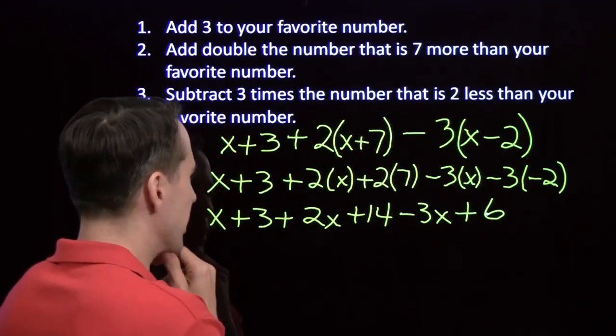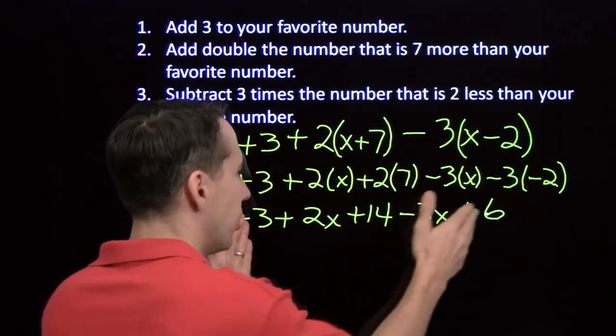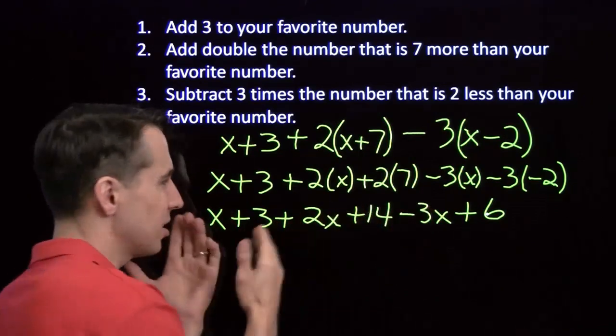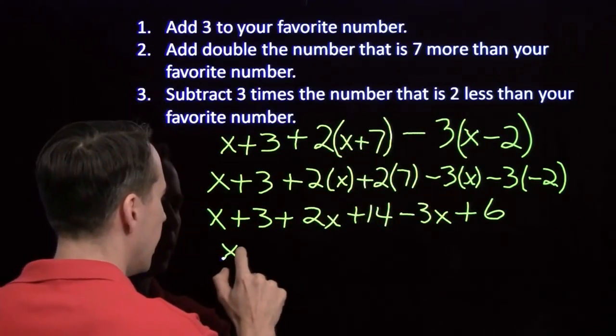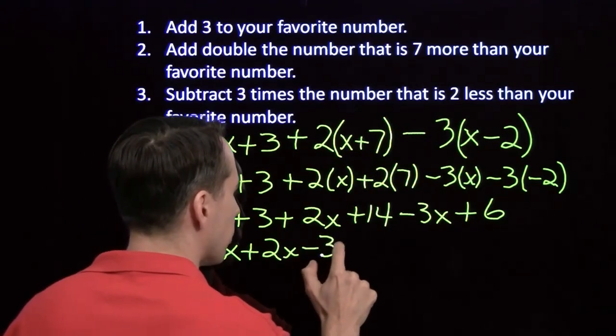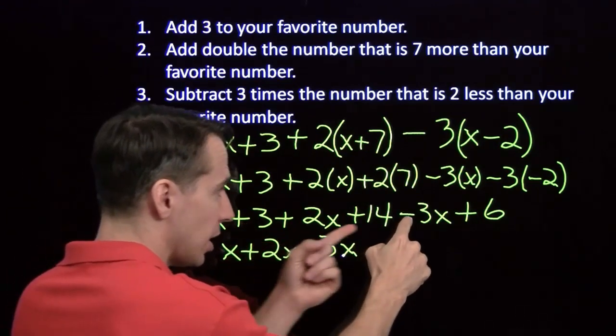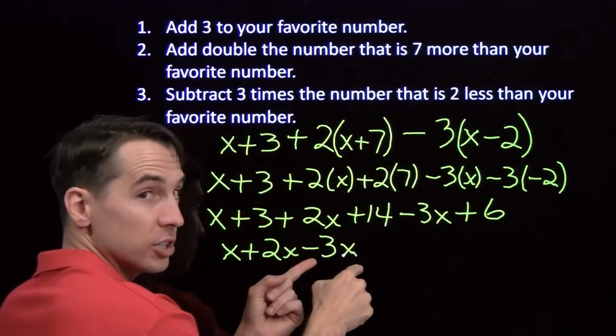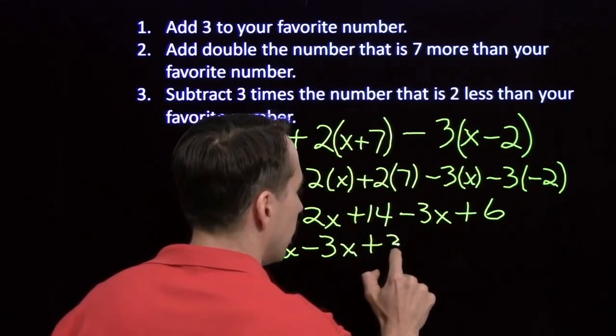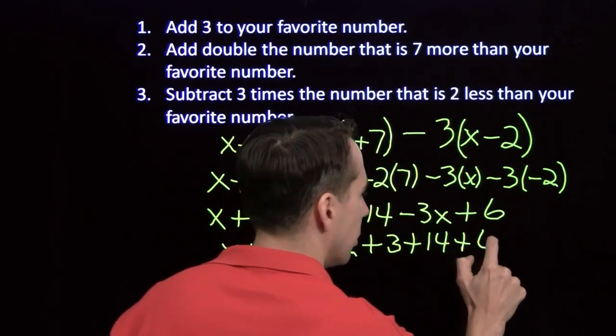Well, that's a little bit simpler than this was. We can reorganize this. We can put all the constant terms together, the 3, the 14, and the 6. And we can put all these things with X's together as well. We can move all this around. We have X plus 2X minus 3X. Puts all our X terms together. And again, we keep our signs. This is minus 3X, so we have minus 3X down here, plus 2X plus 2X. And then we have plus 3 plus 14 plus 6.